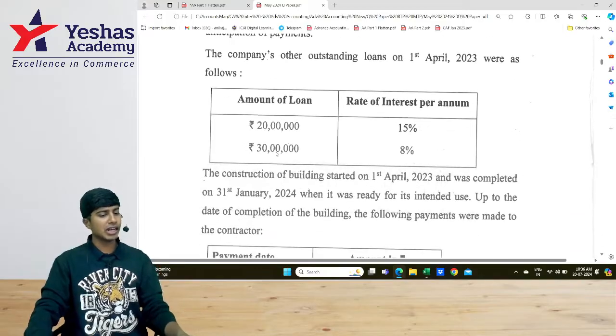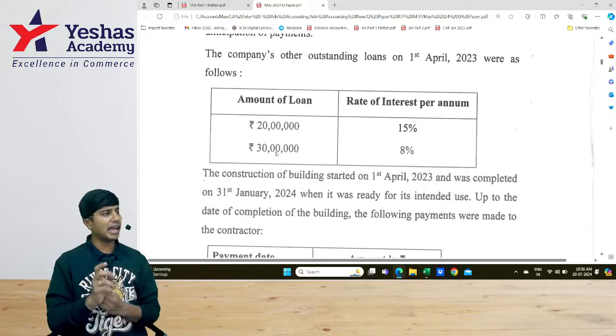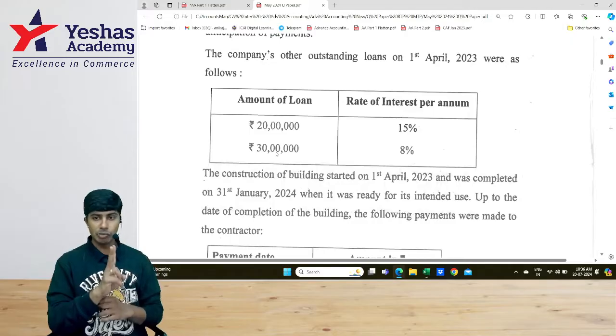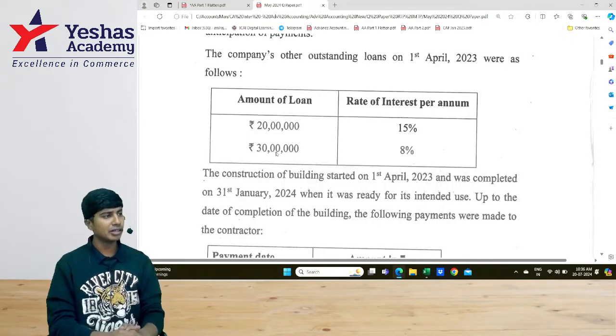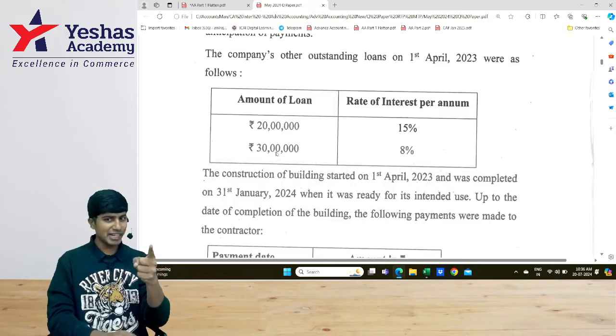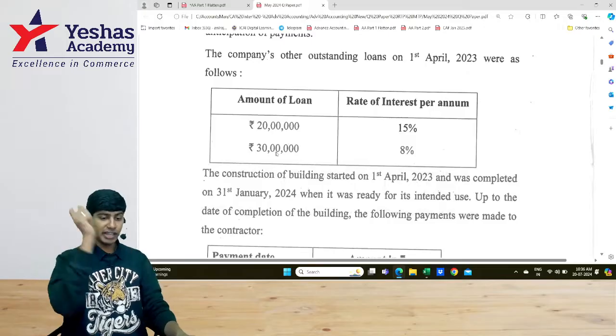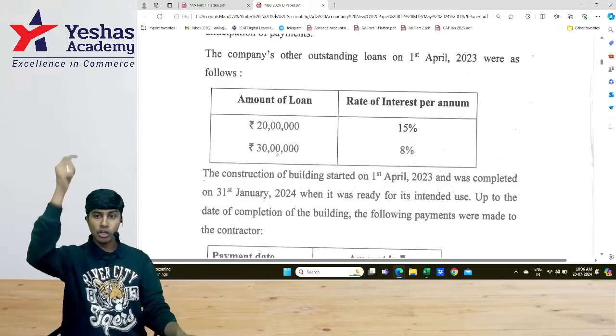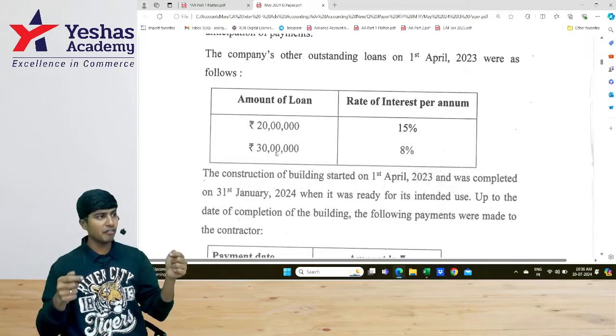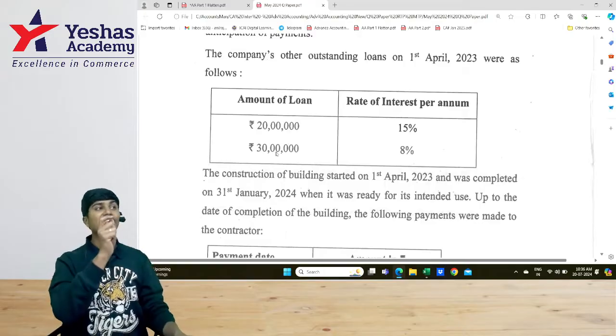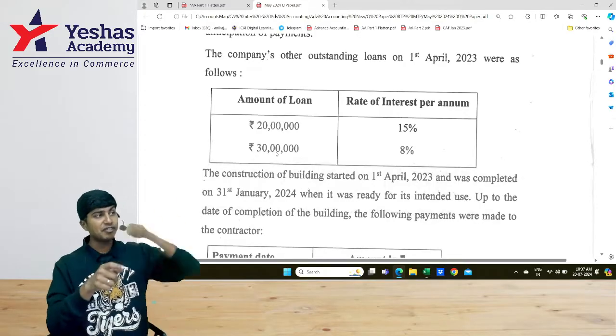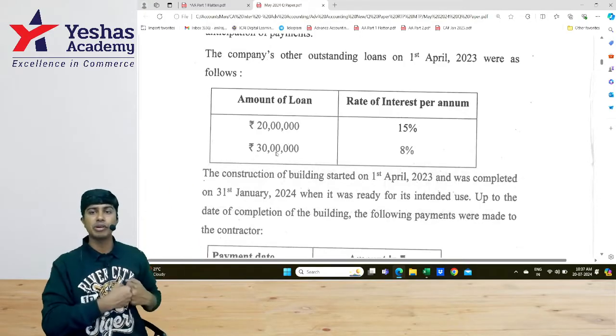Then the company's other borrowings are like this. We have taken two more loans, one of ₹20 lakhs, one of ₹30 lakhs. Two general borrowings are there. So when we apply general borrowings rate, should I apply 15 or 8? Average. Not simple average - ₹20 lakh into 15 percent will get interest, ₹30 lakh into 8 percent will get interest. Total interest by total borrowing if you do you get weighted average rate. That weighted average rate has to be applied after eliminating specific borrowing from the total borrowing.